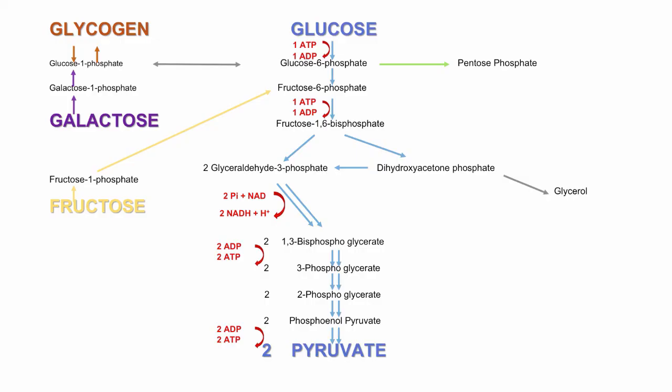What you will need to know for the next class is where certain enzymes are used on this diagram, and also how to spell some of the main enzymes mentioned — for example, phosphofructokinase, hexokinase, and glycogen phosphorylase.